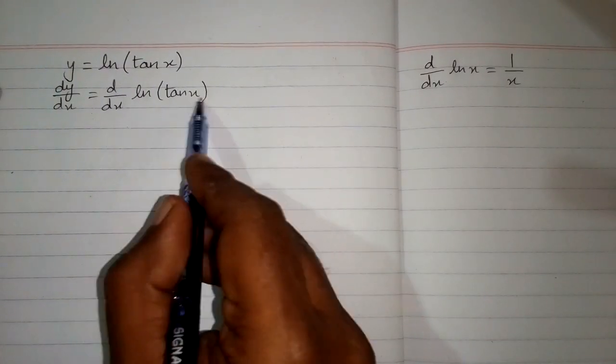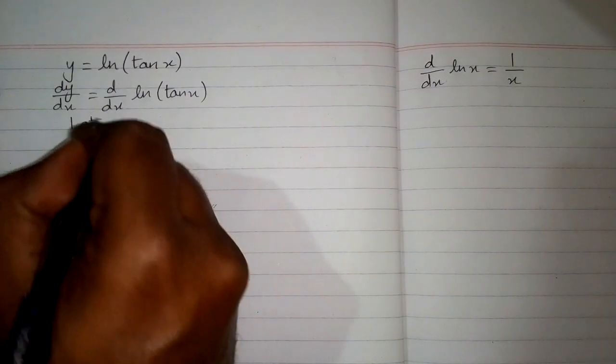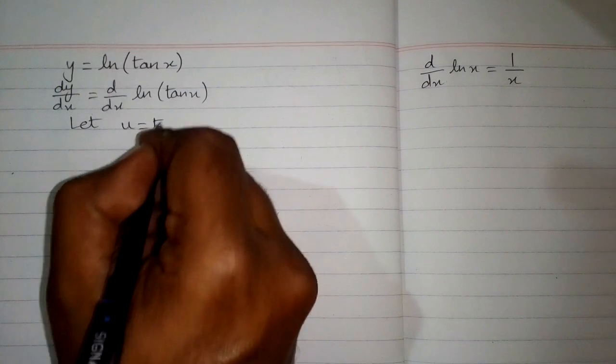But we can see that we have tangent of x in place of this x. So first we will suppose that u is equal to tangent x.